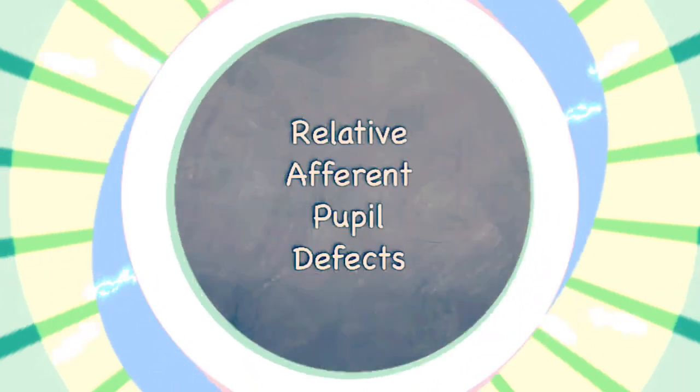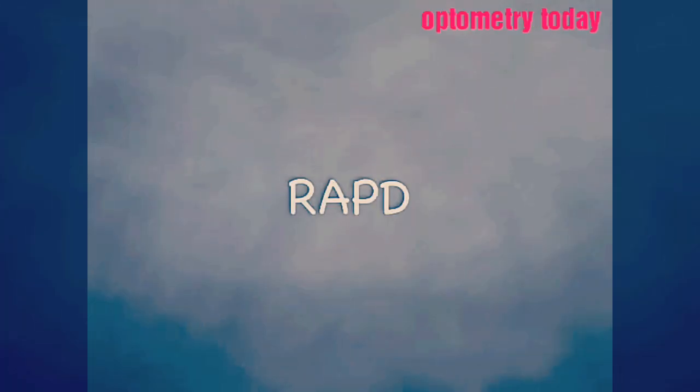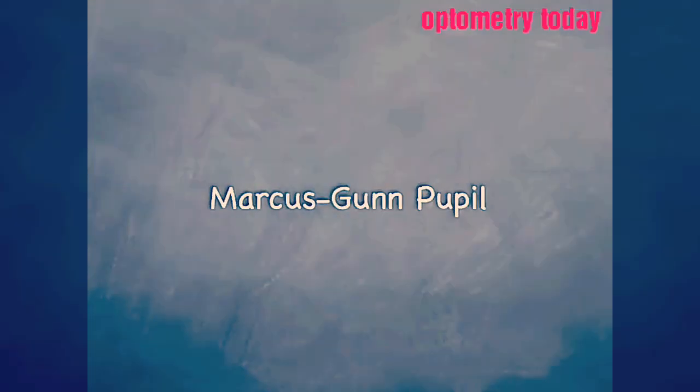Hi, today we're looking at Relative Afferent Pupil Defects, or RAPD. This is also sometimes referred to as Marcus Gunn Pupil.